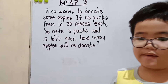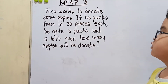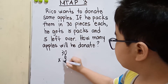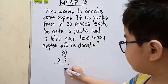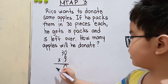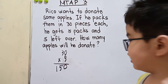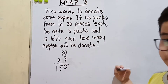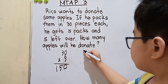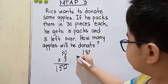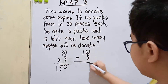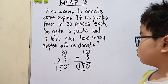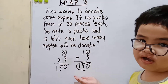So to solve this problem, let us get first the product of 30 and 5. So we have 0 times 5 is 0, 5 times 3 is 15, giving us 150. It says in the problem that 5 are left over, so we will add 5. 150 plus 5, we have 155. So 155 is the final answer.